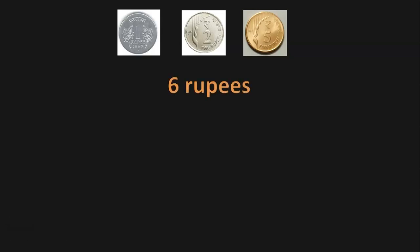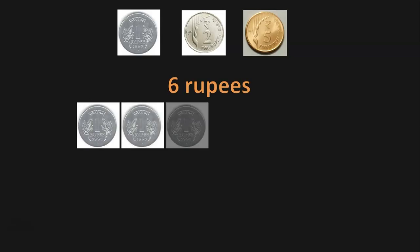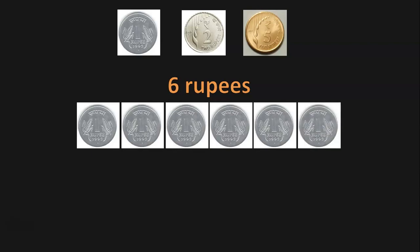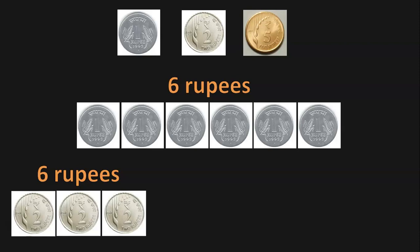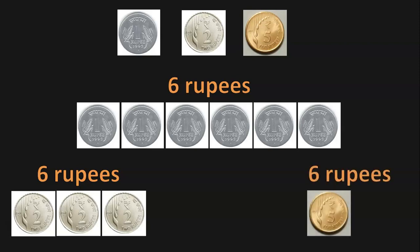Let us see another question with the same combination of 1-Rupee, 2-Rupee, and 5-Rupee coins. How will you make 6-Rupees? Six 1-Rupee coins make 6-Rupees. Three 2-Rupee coins (2+2+2) also make 6-Rupees. And a 5-Rupee coin with a 1-Rupee coin also makes 6-Rupees.